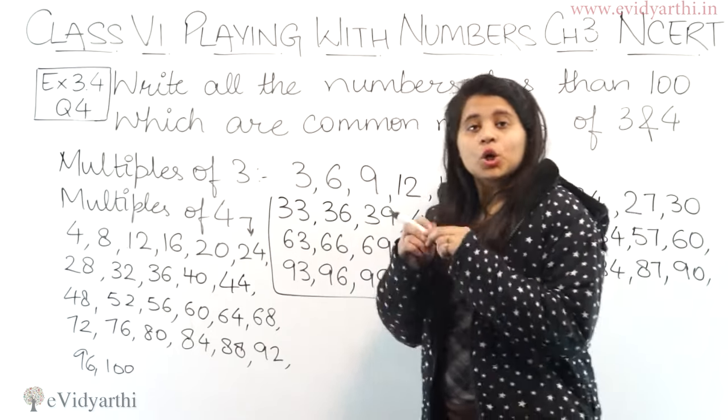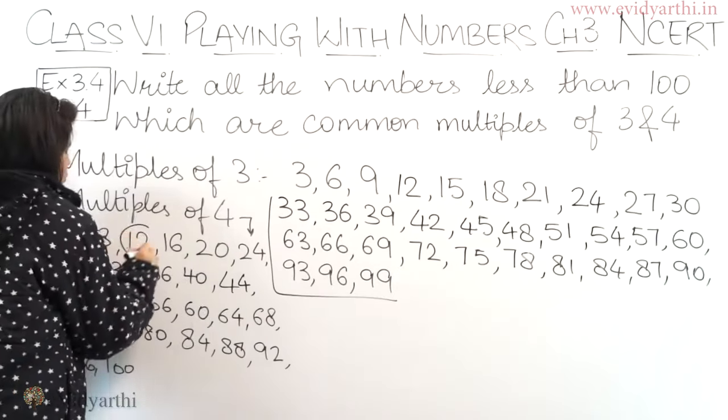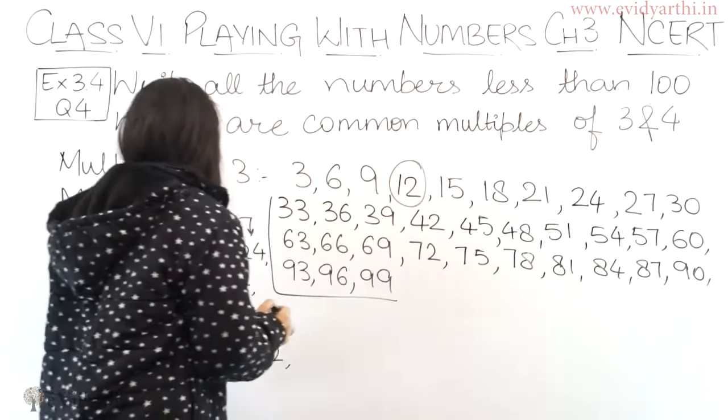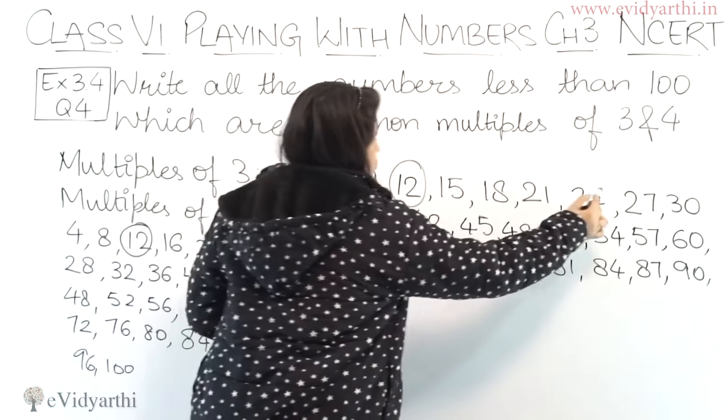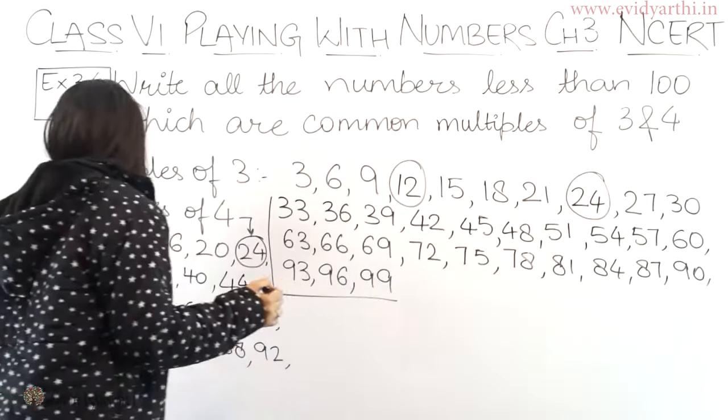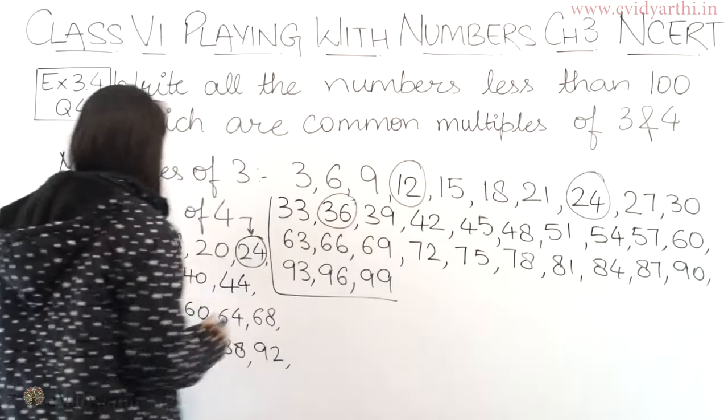Now let's check out the common multiples. Now which are common in both? First 12 is common in both. So we'll circle 12. Then we have 24 which is common in both. So we'll circle 24. After that we have 36. 36 is here and here also.